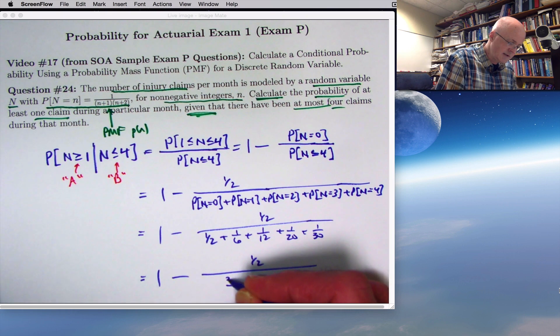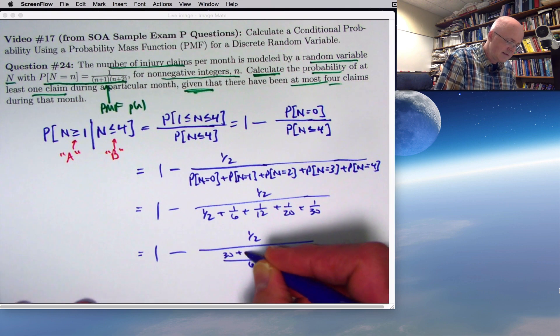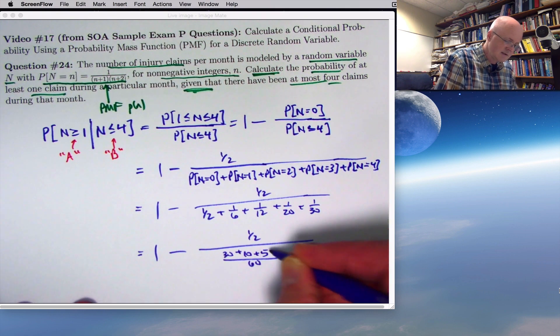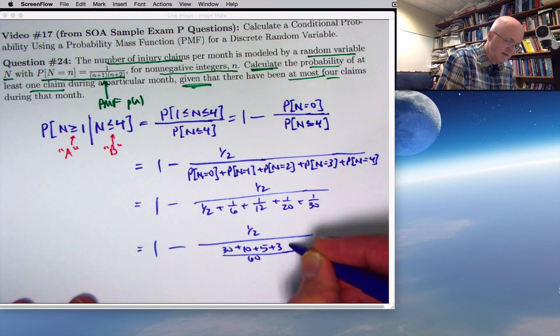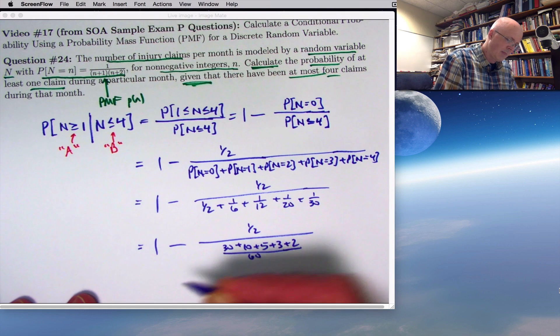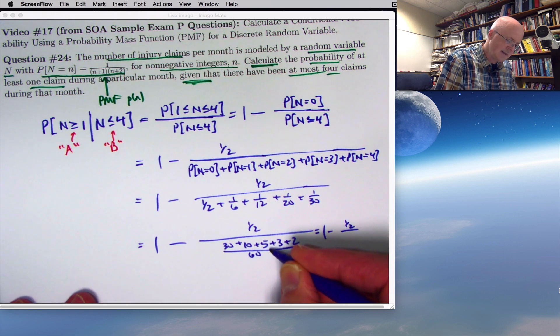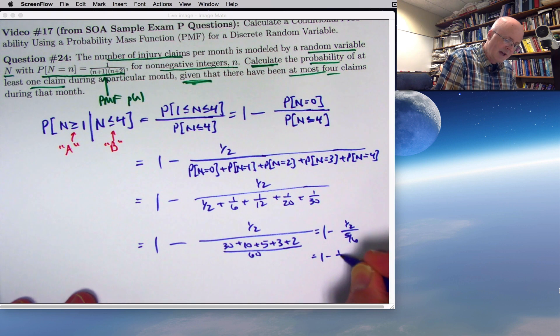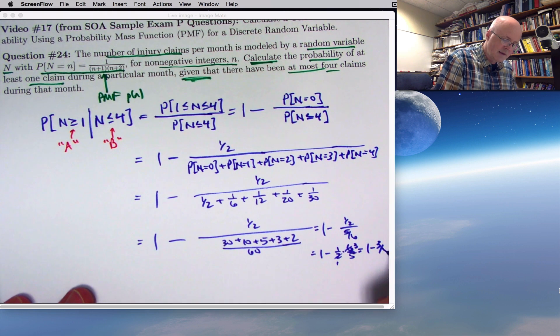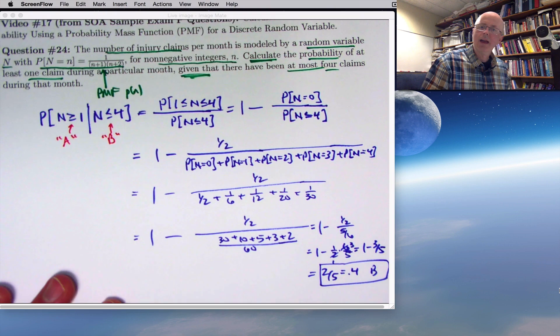Fortunately, there's a nice common denominator you can get here in the bottom of 60. 1 half is 30 sixtieths, 1 sixth is 10 sixtieths, 1 twelfth is 5 sixtieths, 1 twentieth is 3 sixtieths, and 1 thirtieth is 2 sixtieths. So this becomes 1 minus 1 half over 50 sixtieths, which is 5 sixtieths, 1 minus 1 half times 6 fifths. The 2 cancels with the 6 to give you 1 minus 3 fifths, and that means the final answer is 2 fifths, 0.4, and that is choice B on the sample exam, and that is correct. So that's the answer.